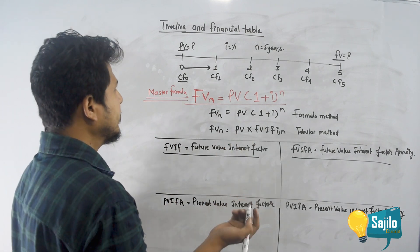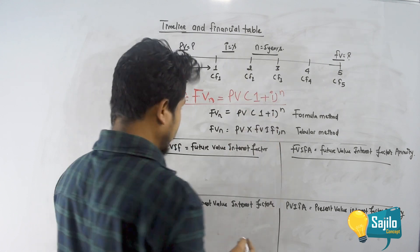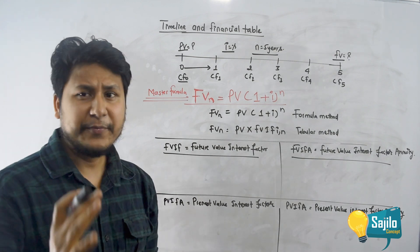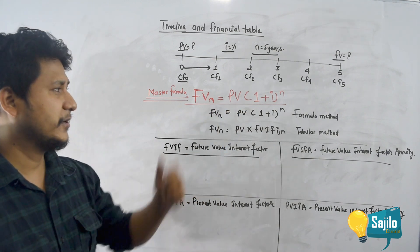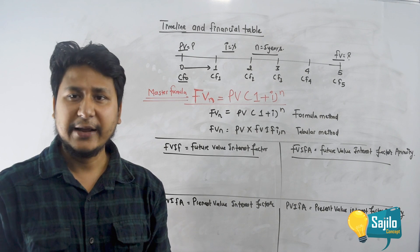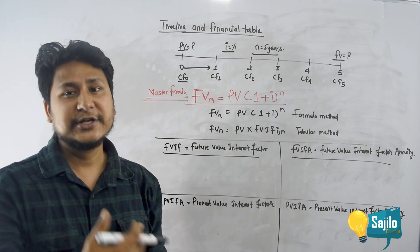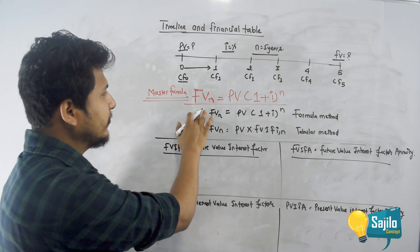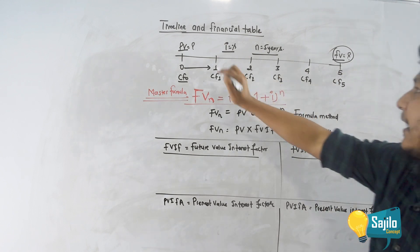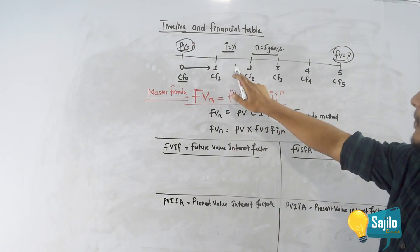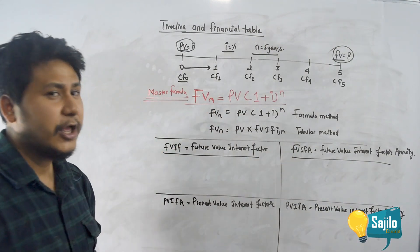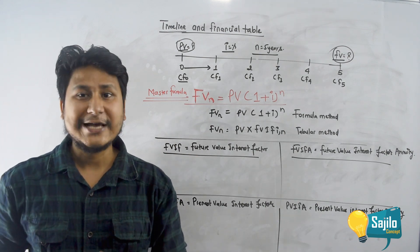The important components are interest rate and number of periods. This is the time value of money to solve problems. So I will give you a master's formula. If you understand the master's formula, you will understand all the other formulas. Future value — what is present value? Present value into (1 + i) to the power n.